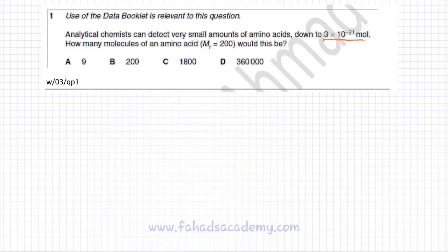The following question is about moles and number of particles. An analytical chemist can detect very small amounts of amino acids down to 3 × 10^-21 moles. The question asks how many molecules of an amino acid would this be, so you need to convert this into the number of particles.